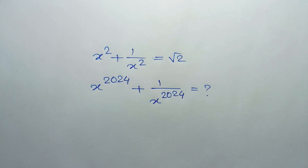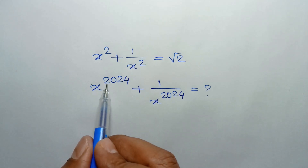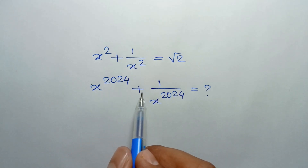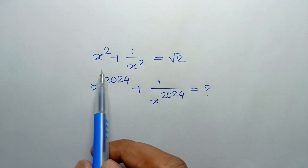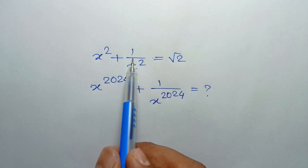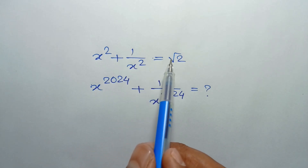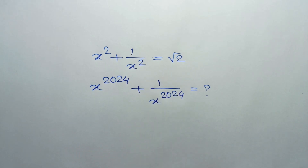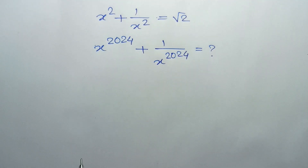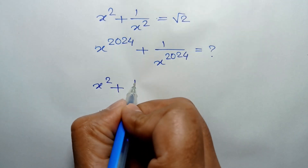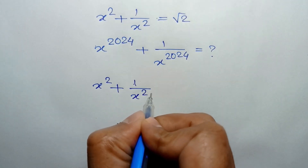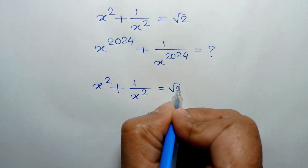Hi everyone. In this video, I am going to show how to find the value of x to the power 2024 plus 1 over x to the power 2024, where x squared plus 1 over x squared is equal to square root of 2. We have given x squared plus 1 over x squared is equal to square root of 2.